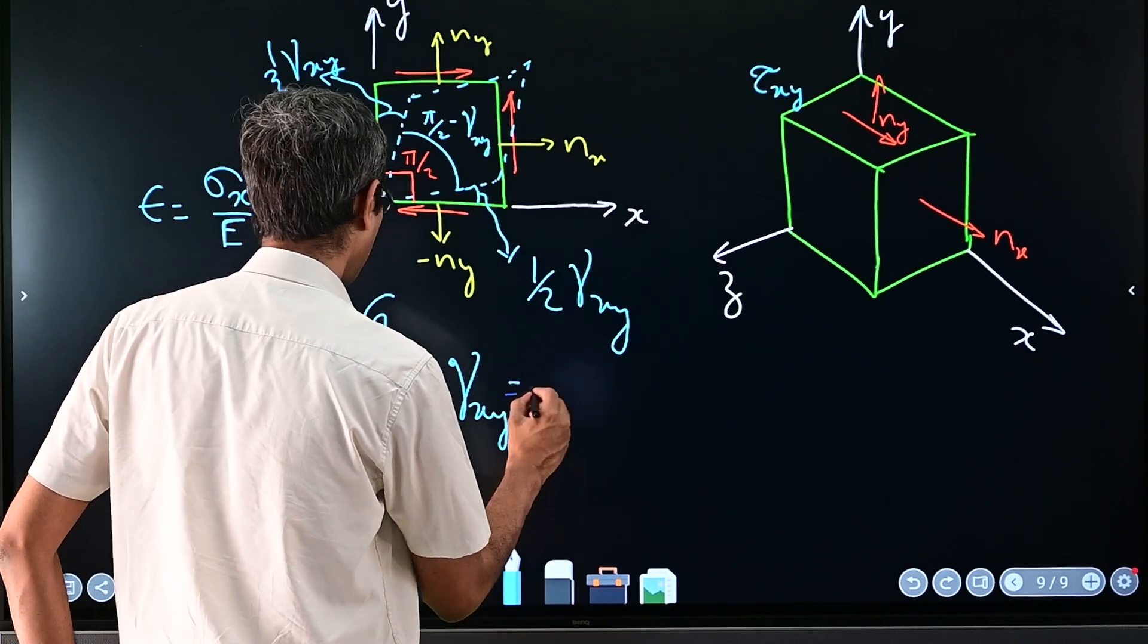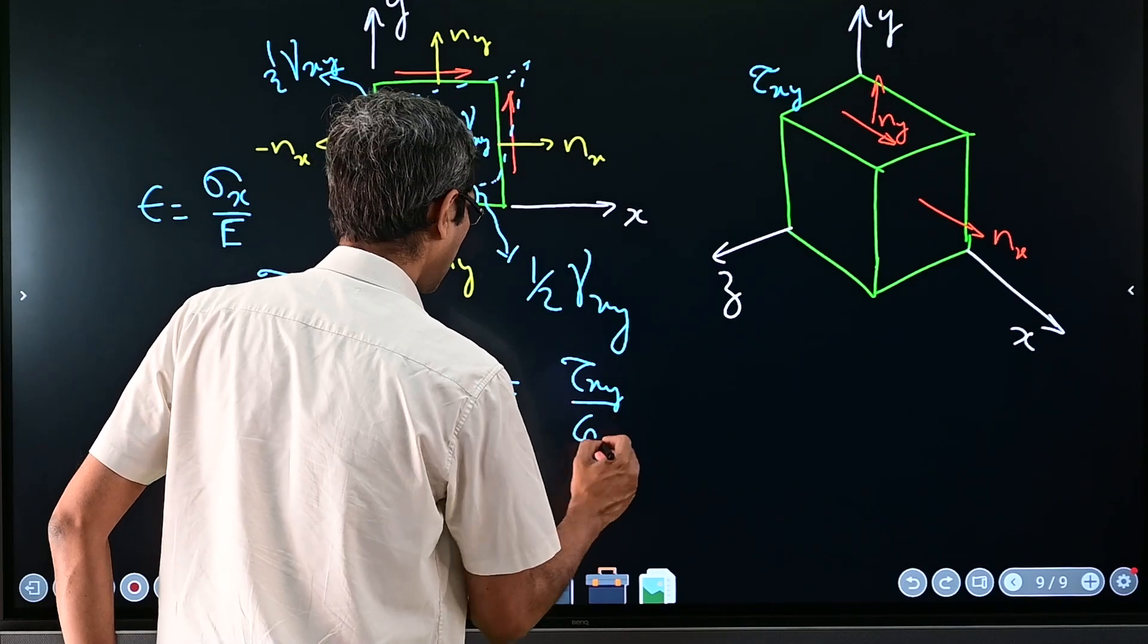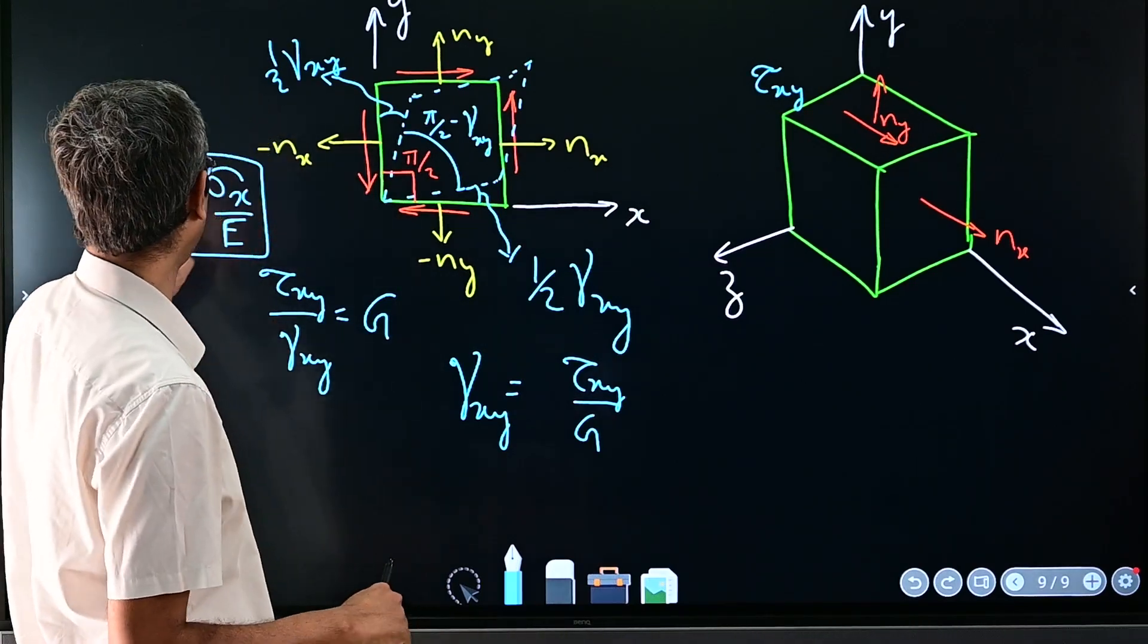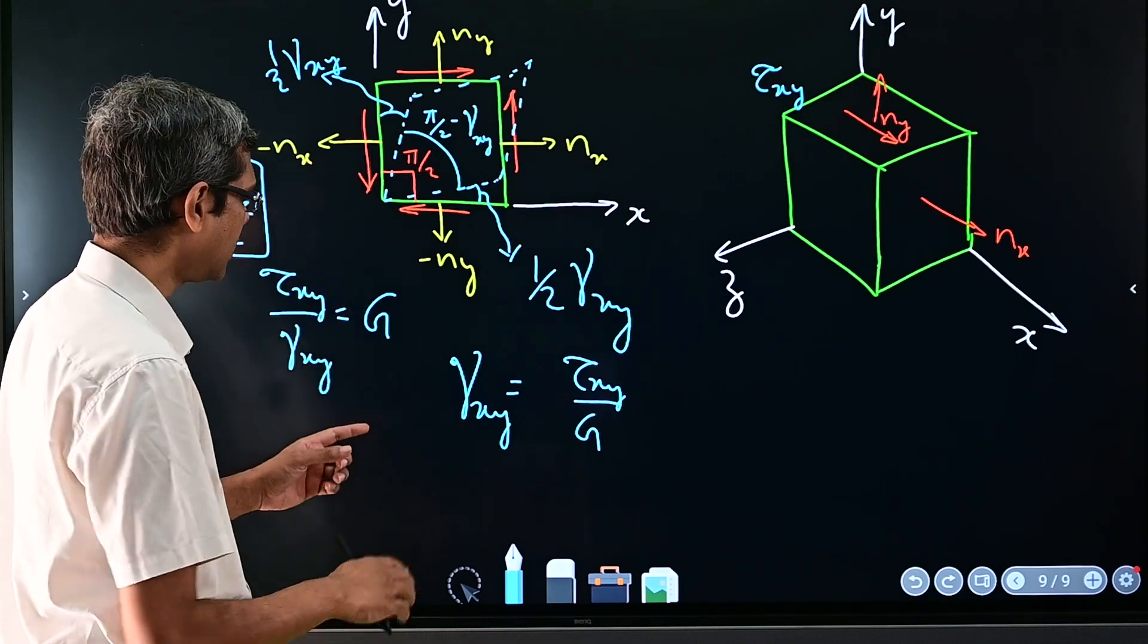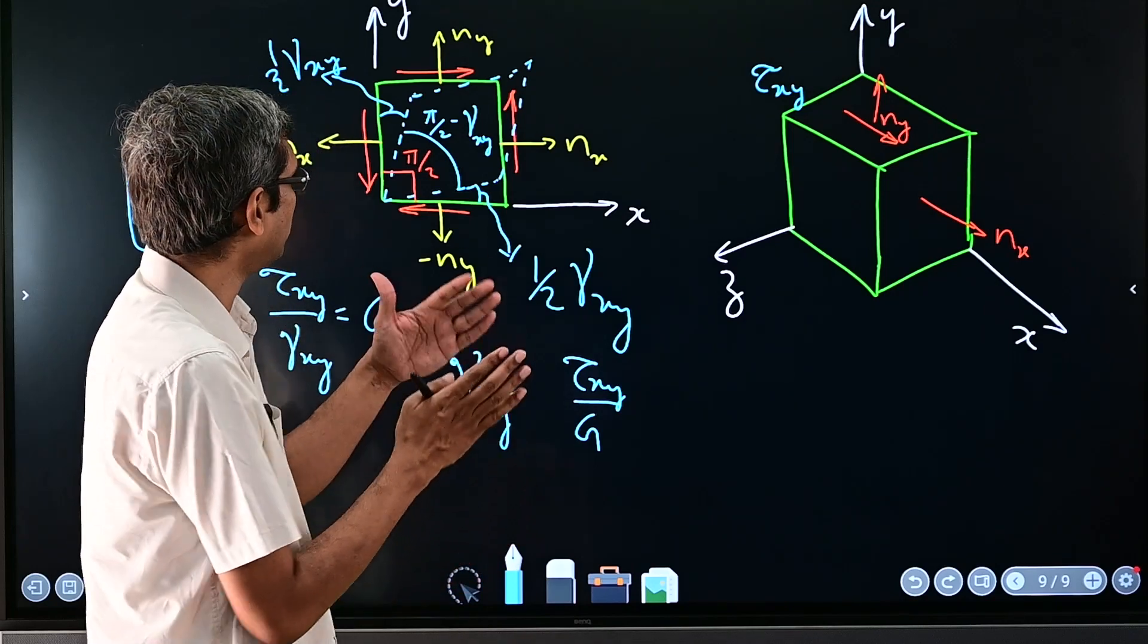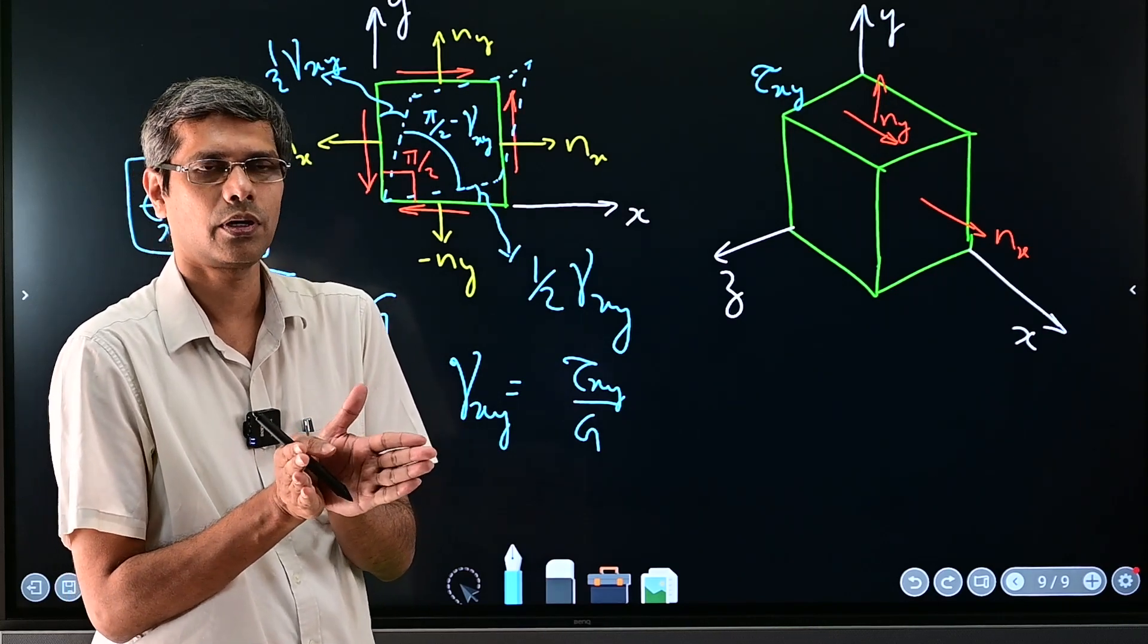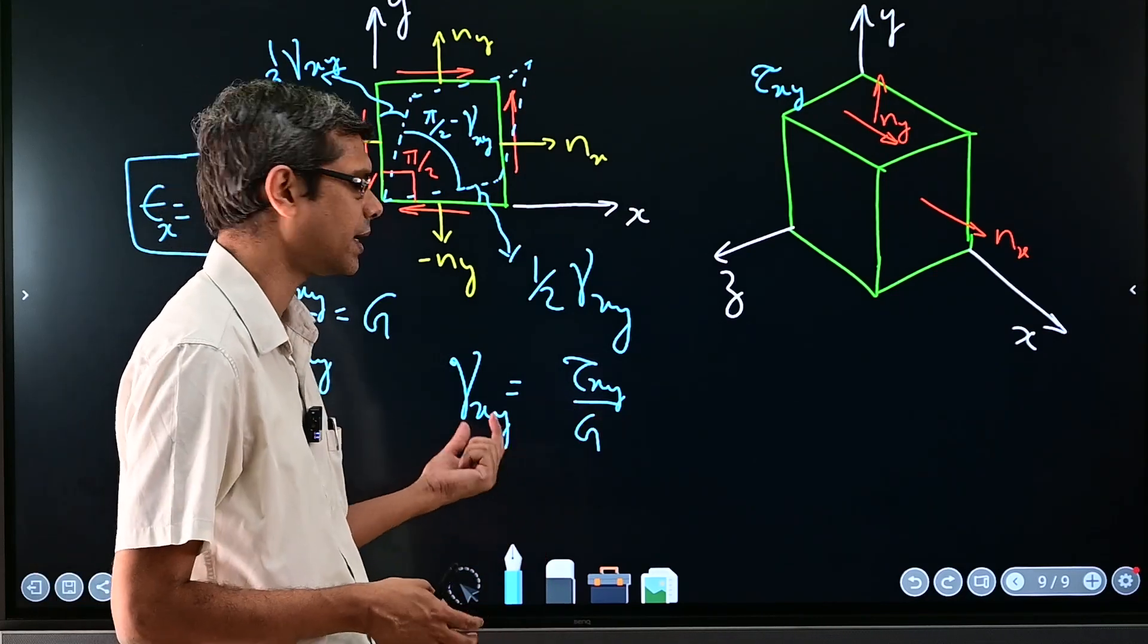So that constant of proportionality is called the shear modulus. So you remember, you wrote that epsilon is sigma_x over E, Young's modulus. So in a very similar way you can write also that gamma_xy—now gamma_xy is tau_xy over G. So while writing normal strain and normal stress you didn't require two indices, so only x was sufficient. Now here while writing this we are requiring two indices.